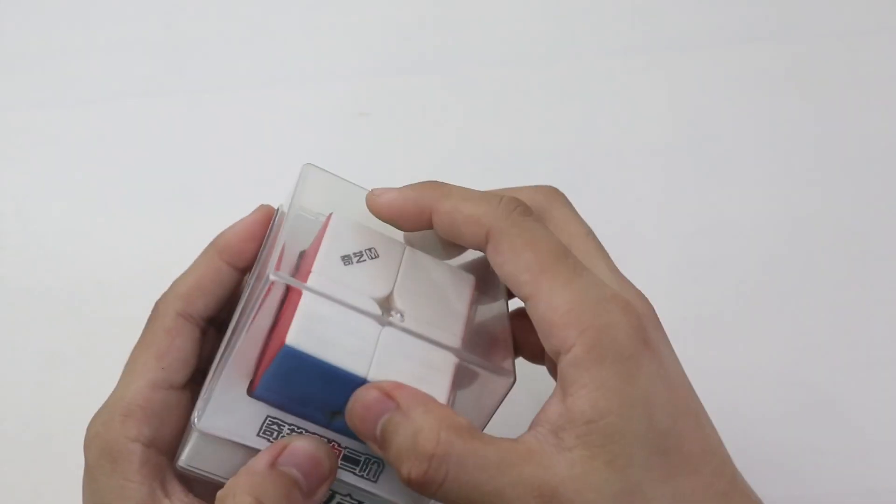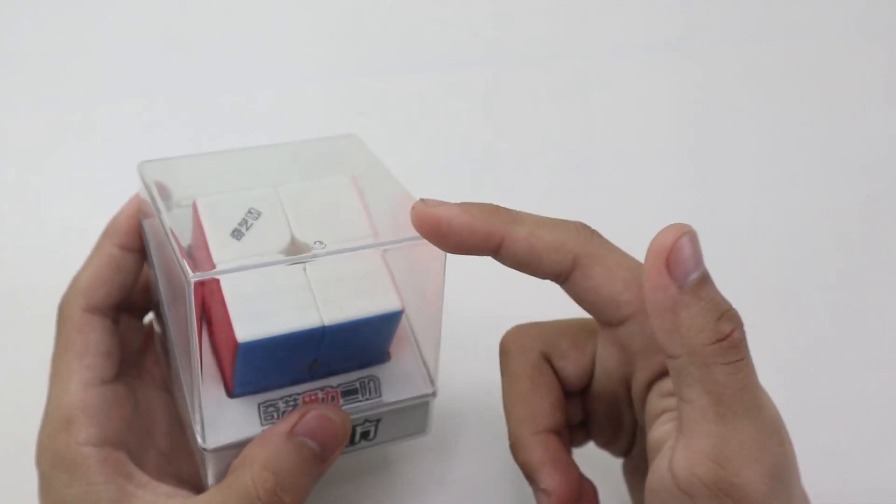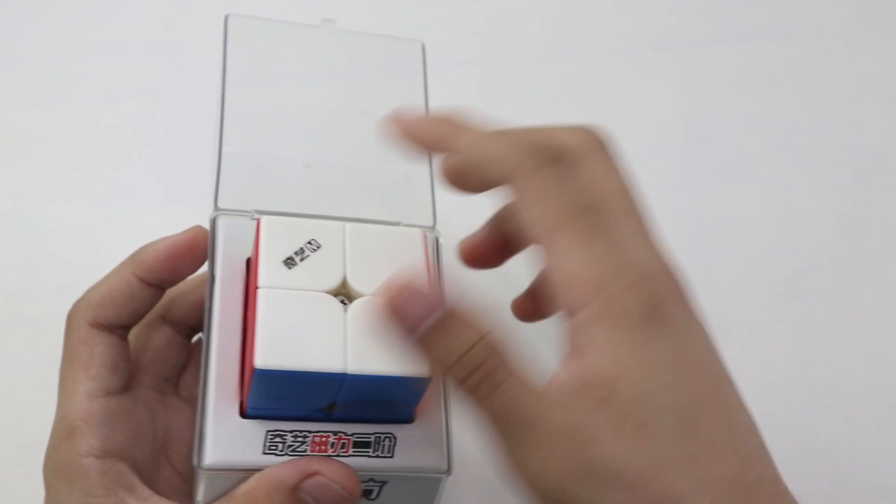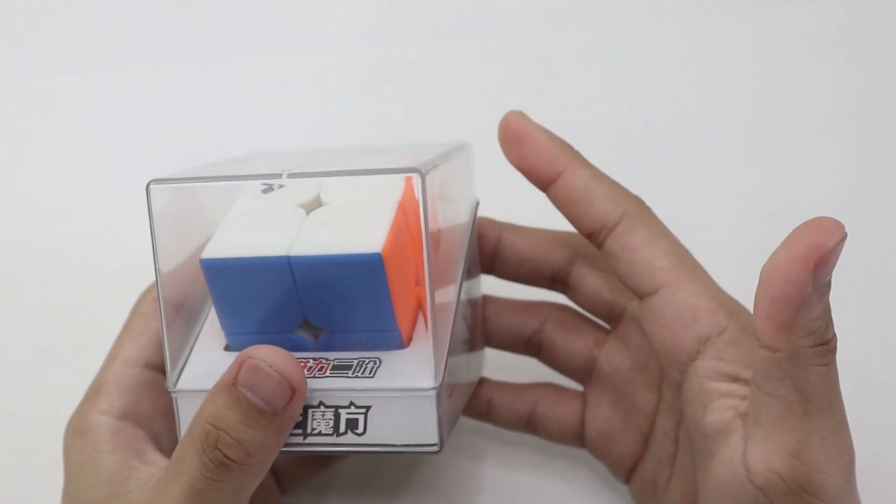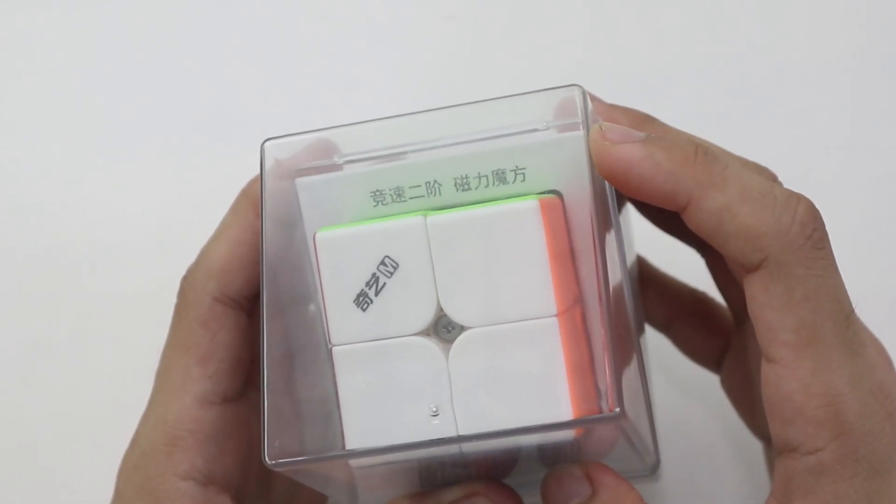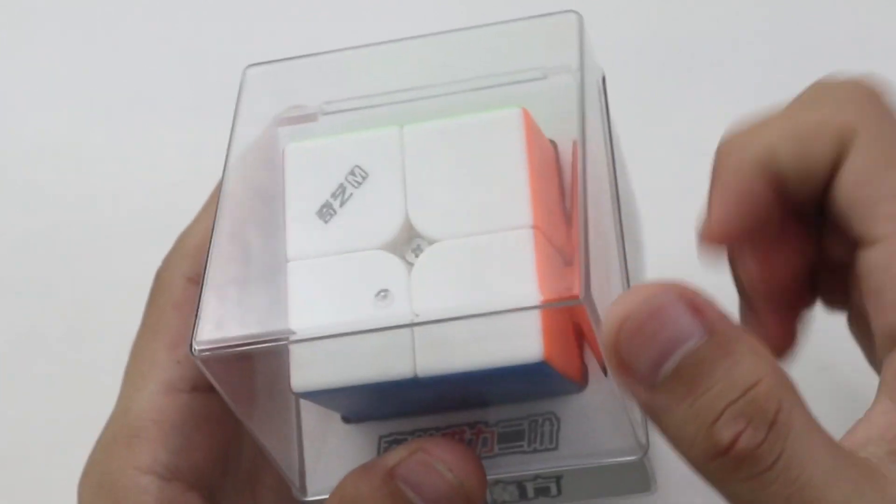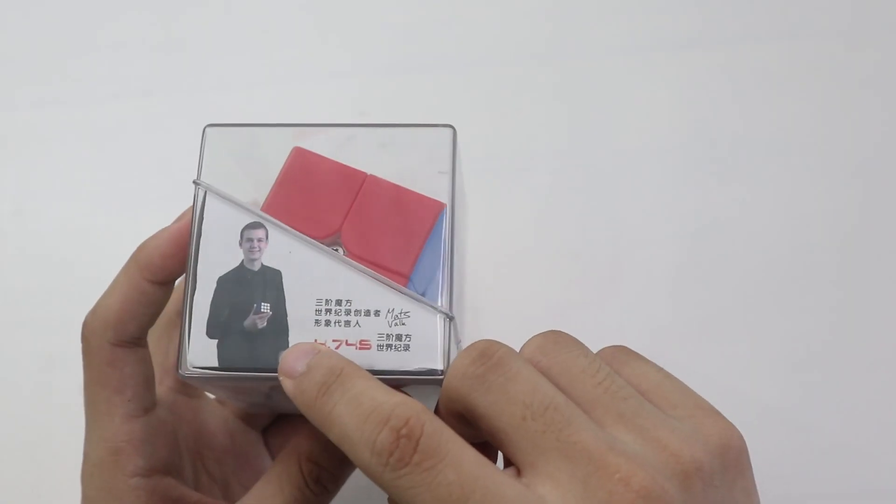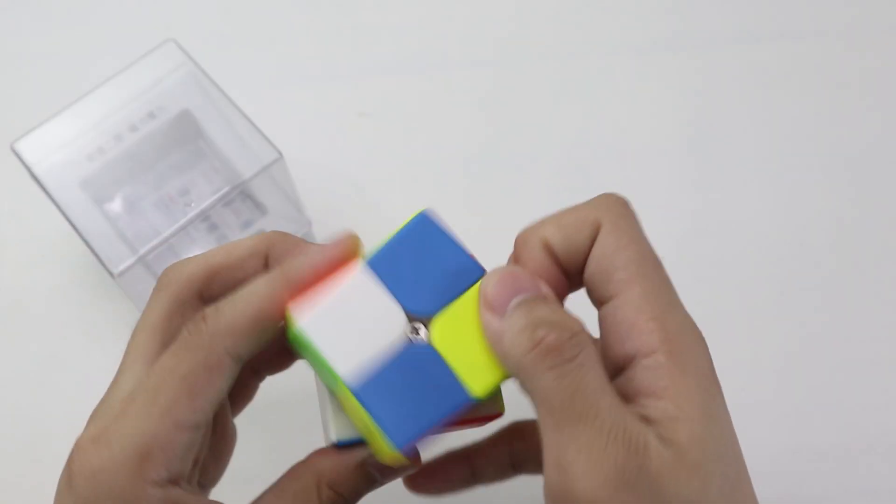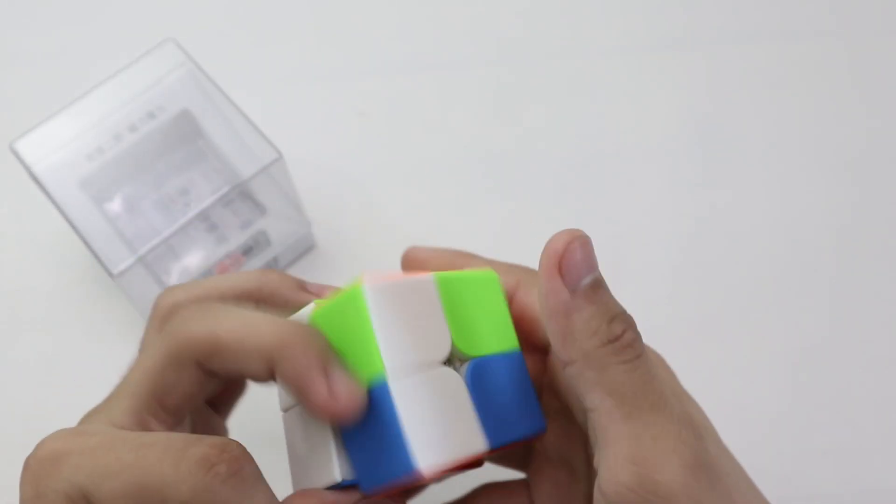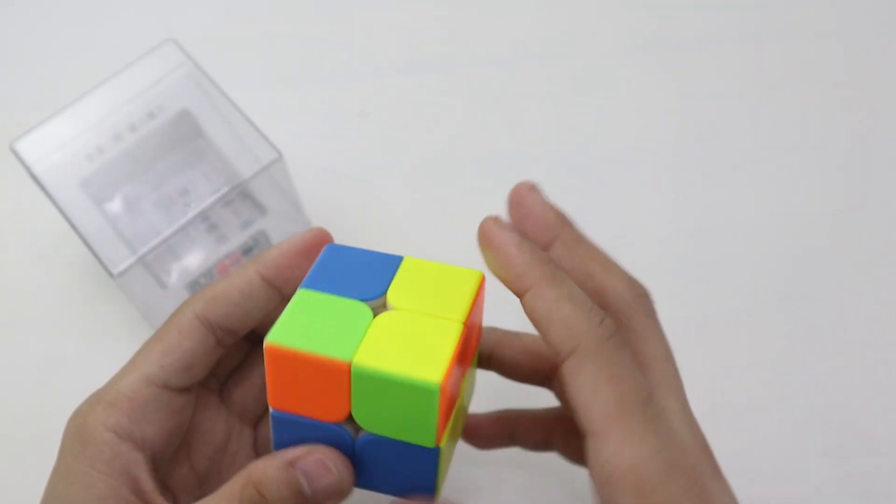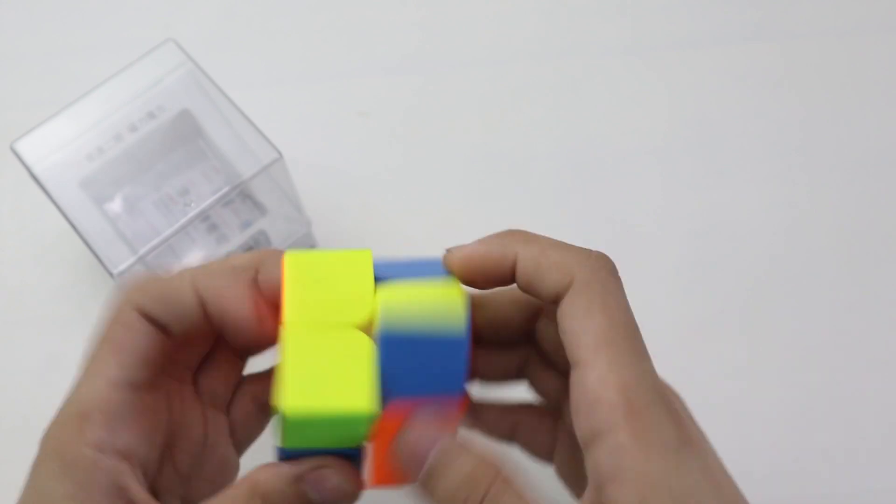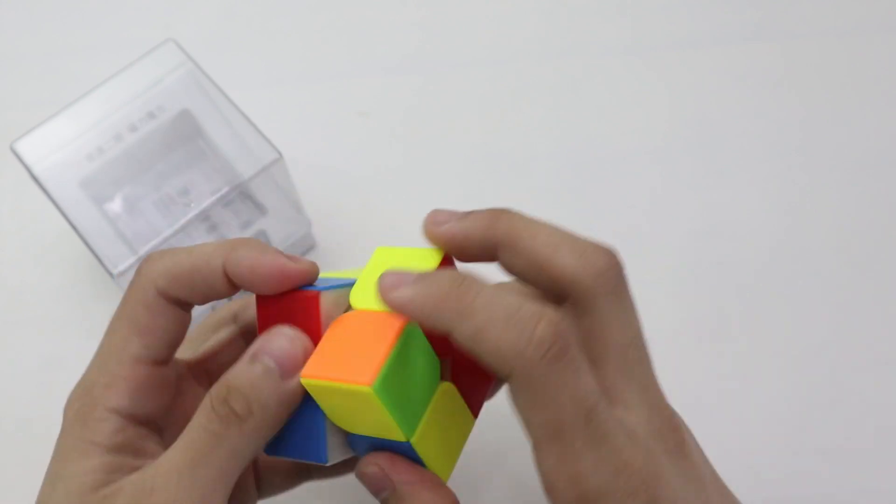Third on the list is this latest budget 2x2 puzzle from QiYi, the QiYi MS 2x2. Yeah, great names right? So out of the box, can we just take a moment and appreciate QiYi's efforts in making this cube box? It's hard plastics which you might like and that's it. Oh wait, there's more. Turning this cube is completely satisfying like ugh. Oh my god. Good job, QiYi.